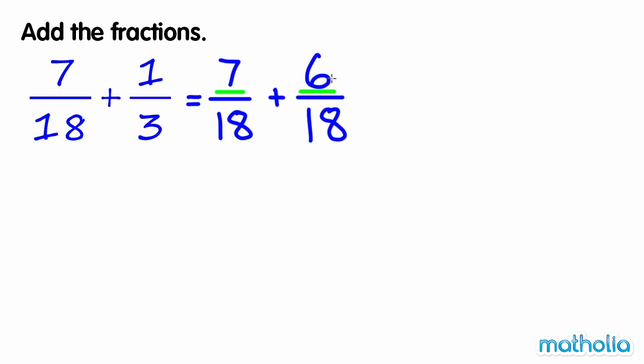7 plus 6 equals 13. So 7 18ths plus 6 18ths equals 13 18ths. 13 18ths is in its simplest form, so 7 18ths plus 1 3rd is equal to 13 18ths.